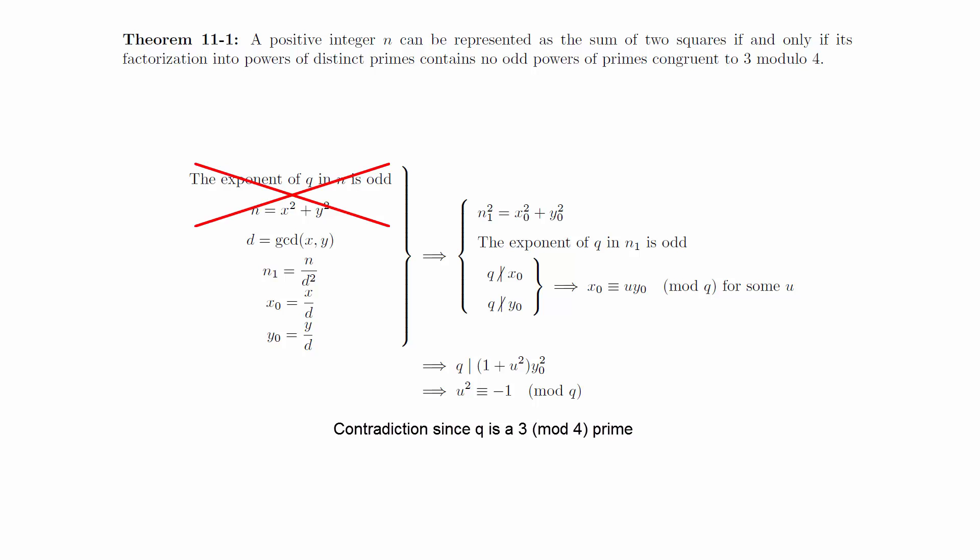Therefore, the assumption that we can write n as the sum of squares is wrong, and all the 3 modulo 4 primes in the factorization of n must be raised to even powers.